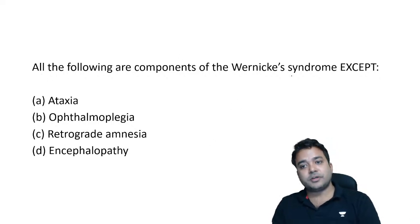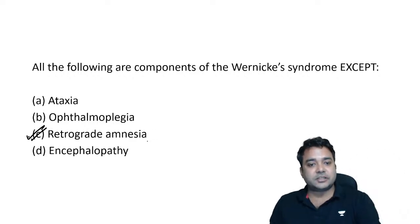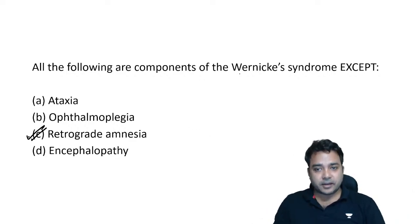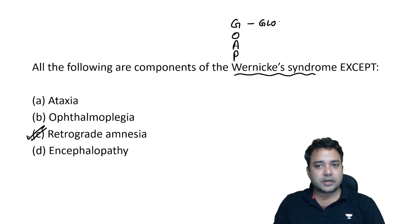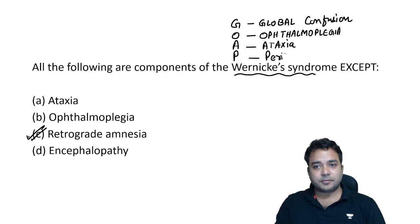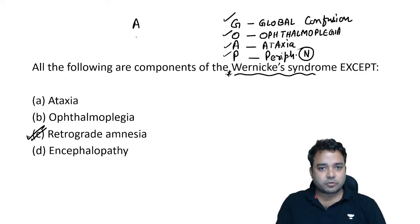Another manifestation of chronic alcohol poisoning is Wernicke syndrome. They keep asking: all of the following are components of Wernicke syndrome except — and the answer goes with confabulation, which is a feature of Korsakoff psychosis. For Wernicke encephalopathy, use the mnemonic GOAP: G for global confusion due to encephalopathic changes, O for ophthalmoplegia, A for ataxia, P for peripheral neuropathy.